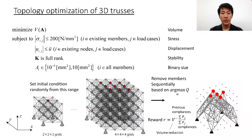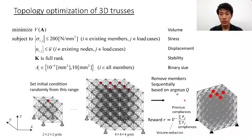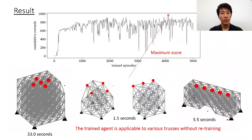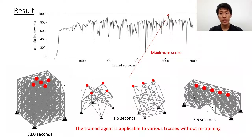We calculate the action values Q for all members, remove members based on Q values, observe the reward, train the parameters, and calculate the action values for the remaining members again. The removal sequence of members is repeated until the truss no longer satisfies the stress and displacement constraints. We define this removal sequence as one episode. The episode is repeated 5,000 times, and the training parameters are updated iteratively in the process.